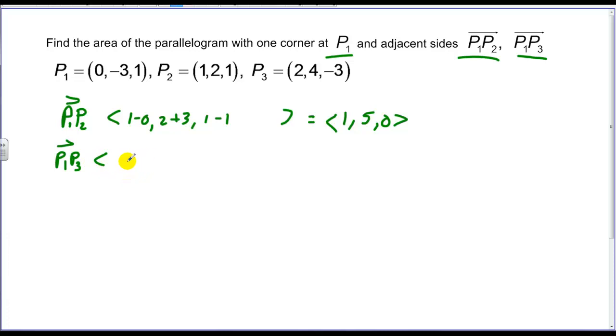Again, tip minus tail, so I have 2 minus 0. I have 4 plus 3, and I have negative 3 minus 1, which gets me a 2, a 7, and a negative 4. And then I'm going to, first of all, find the cross product. So I have my i, j, and k for the two vectors of 1, 5, 0, 2, 7, and negative 4. We'll copy these once again.